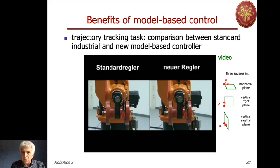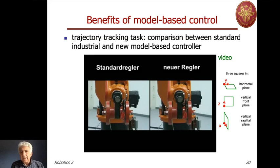The task is to execute a trajectory which is a sequence of three squares in position while keeping the same orientation. This is a 6R manipulator, so there is no redundancy. The three squares are along the three coordinate axes: first the y-direction in the horizontal plane, then returning to the same point, then in the vertical front plane, and finally in the sagittal plane.